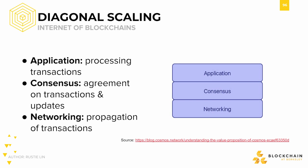Below that, there's a need for a consensus layer to make sure that the entire network agrees on transactions and updates made to the underlying distributed database. And below that, there's the network itself, tasked with propagating transactions through the network, making sure all nodes are getting updates within reasonable time.